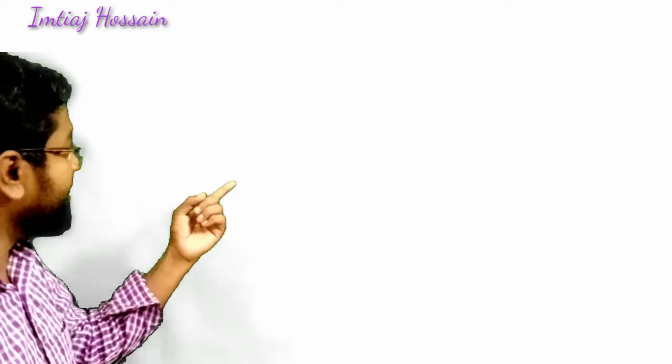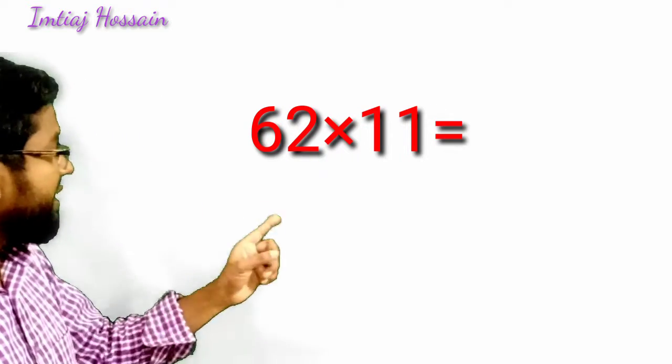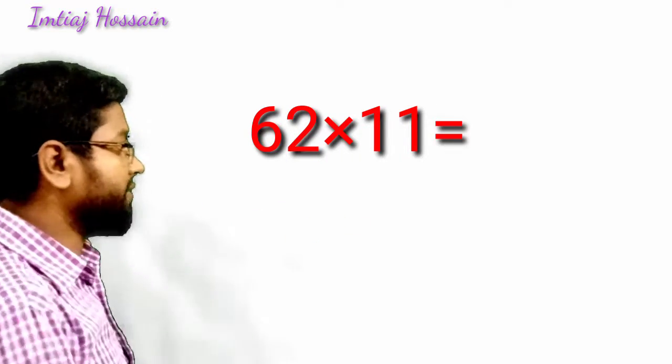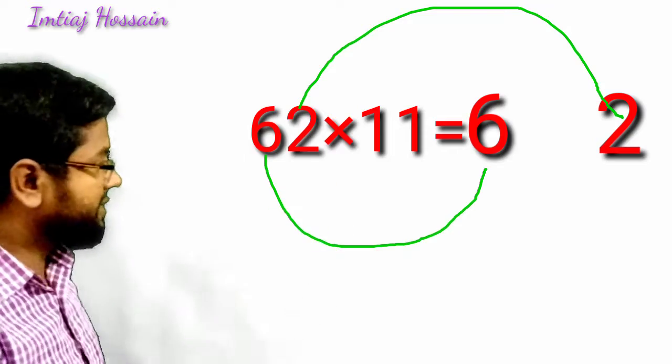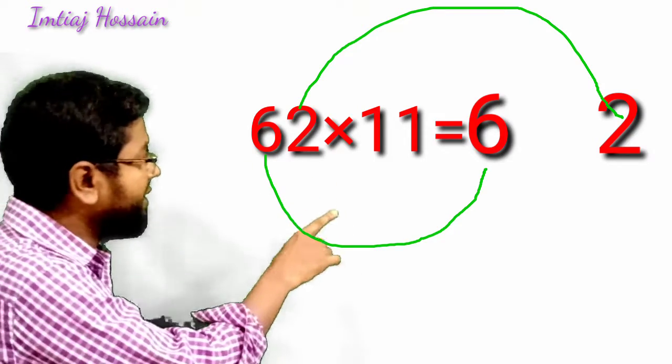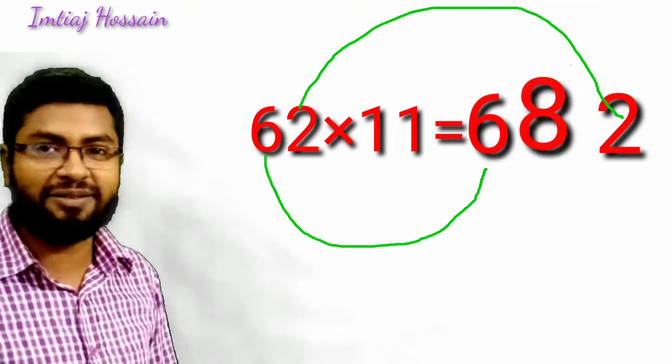See the next one? 62 times 11. So 6 and 2, these two digits will be separated. 2 will be last and the first digit will be 6. In the middle, if I add 6 and 2, it will be 8. That 8 will be in the middle.